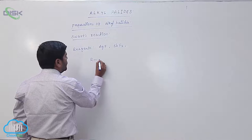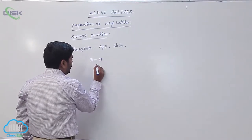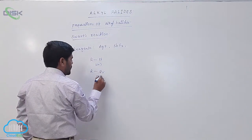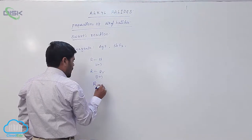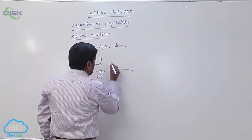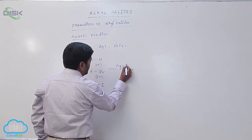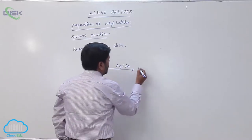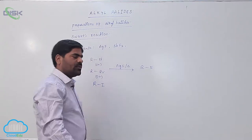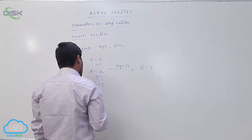Alkyl chloride, alkyl bromide, or alkyl iodide reacts with silver fluoride, followed by heating. It forms alkyl fluorides. So this particular reaction is known as the Swartz reaction.